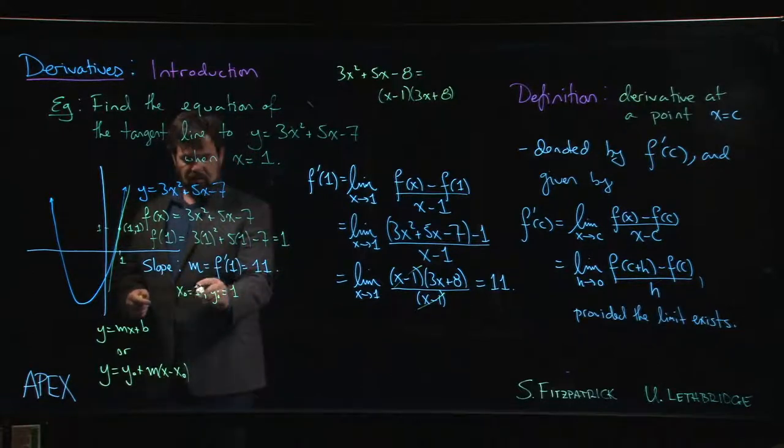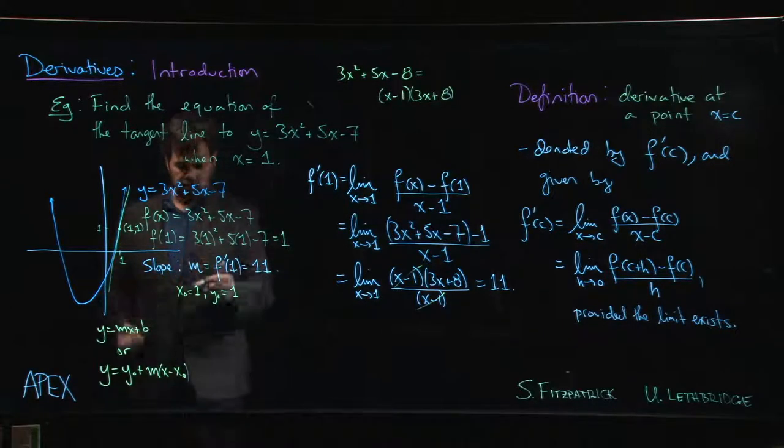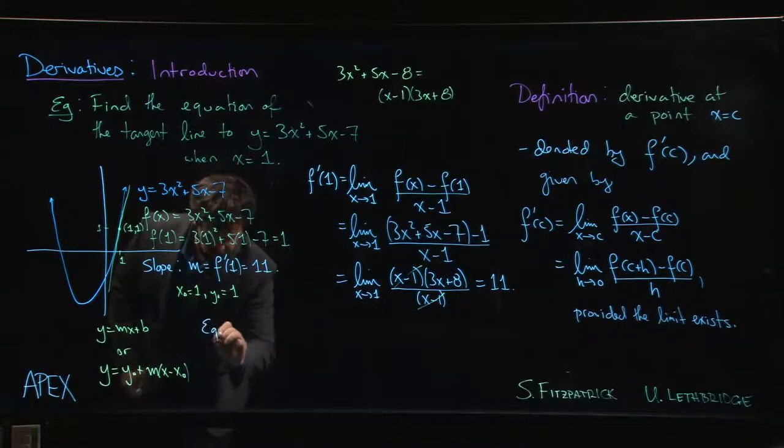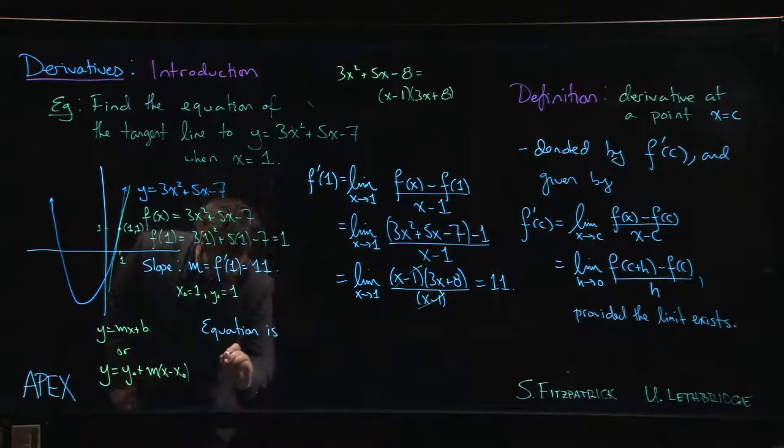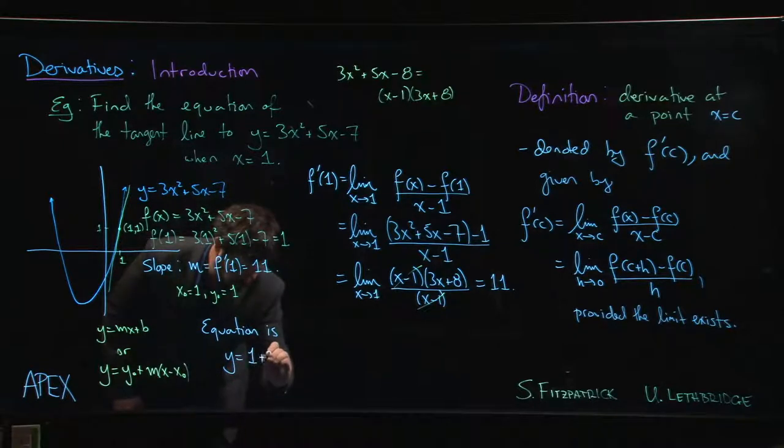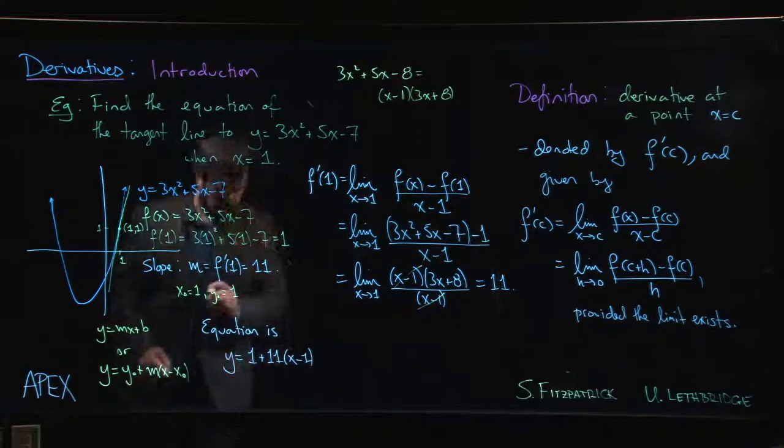So we've got x naught, we've got y naught, we've got m. We have everything we need to write down the equation of the line. So the equation is y equals 1 plus 11 times x minus 1.